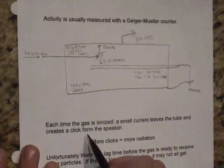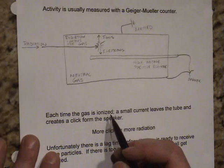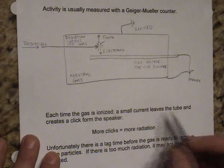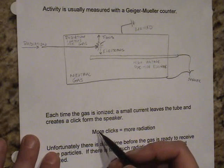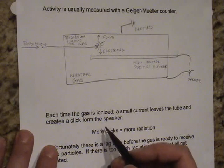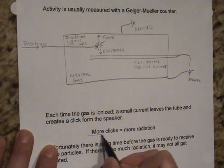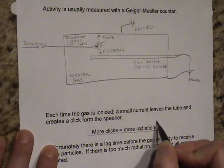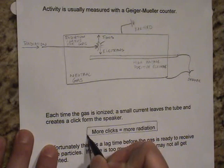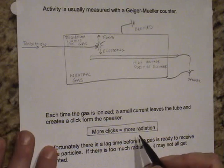So each time that the gas becomes ionized, a small current leaves the tube, and that creates a click. If you've ever seen a Geiger counter, then you've heard the clicking sound that it makes. And of course, it's a very simple rule. You would like to not hear very many clicks, because more clicks means that you're being exposed to more radiation.